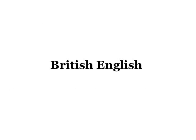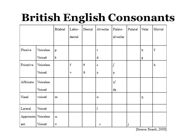Now first of all, we will take a look at the sound inventory of British English. Here is a chart of British English consonants from Roche 2000. As we can see, according to manner of articulation, British English consonants can be plosive, fricative, affricate, nasal, lateral, or approximant.